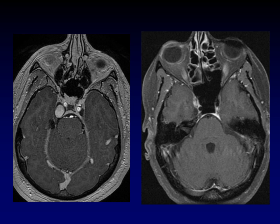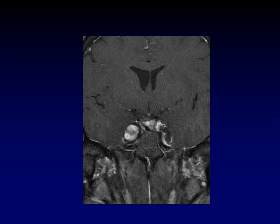Here is the same concept in the coronal plane. We can see this is patient one's enhancing mass, and you can see a rim of CSF all the way around the outside of it — it's an expanded Meckel's cave. Here's Meckel's cave on the normal side.